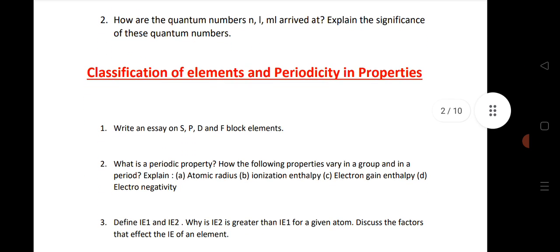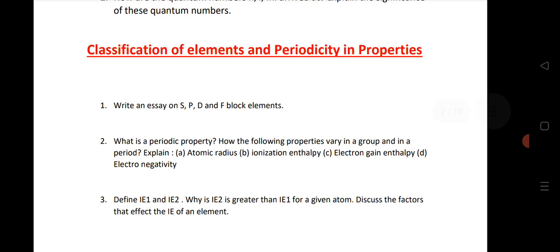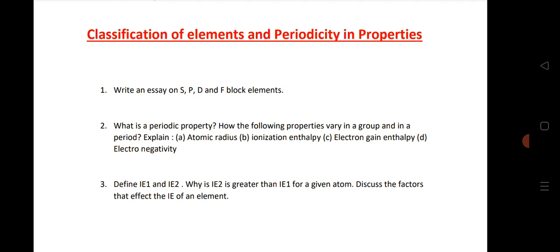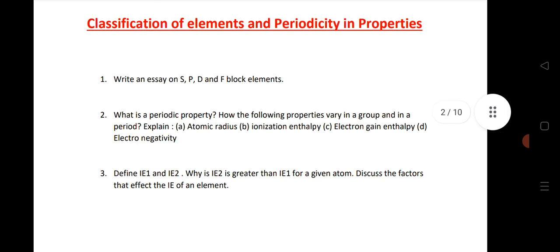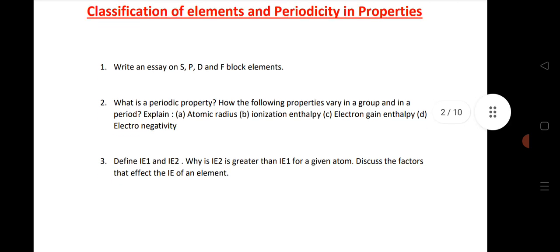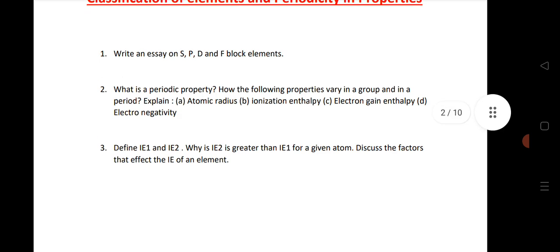Let us see the next chapter, classification of element and periodicity in properties. S block, P block, D block, all blocks. Important question: periodic property with atomic radius, ionization enthalpy, electron gain enthalpy, electronegativity and I1 and I2. Why I2 is greater than I1?